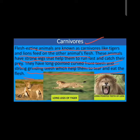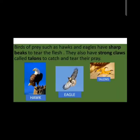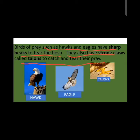Some birds are also carnivores. Birds of prey such as hawks and eagles have sharp beaks to tear flesh and strong claws called talons to catch and tear their prey. Birds like hawk, eagle, vulture, and kite are carnivore birds, also known as birds of prey. They have sharp hooked beaks and sharp claws — called talons — for tightly holding their prey.